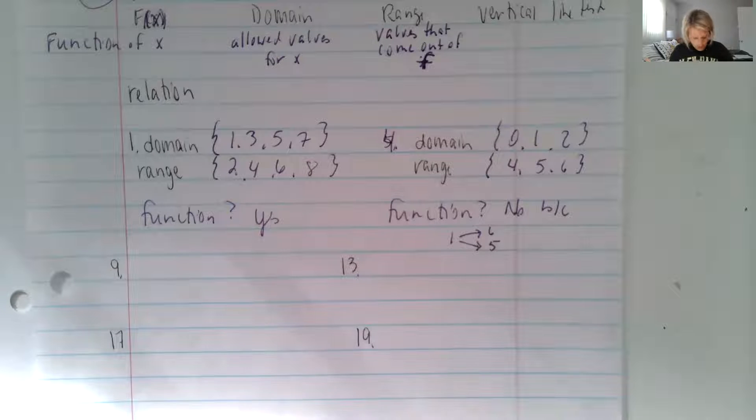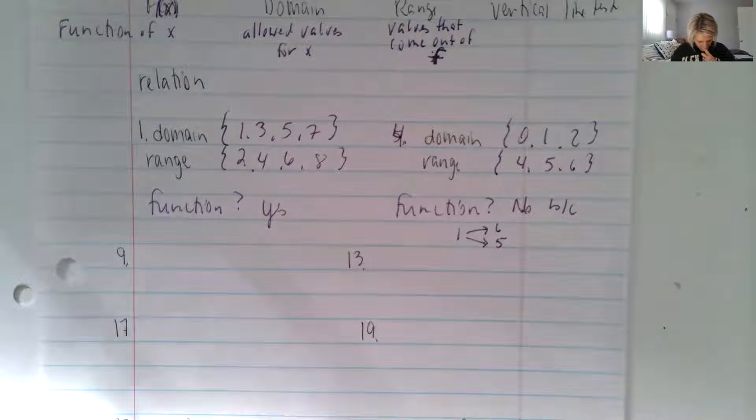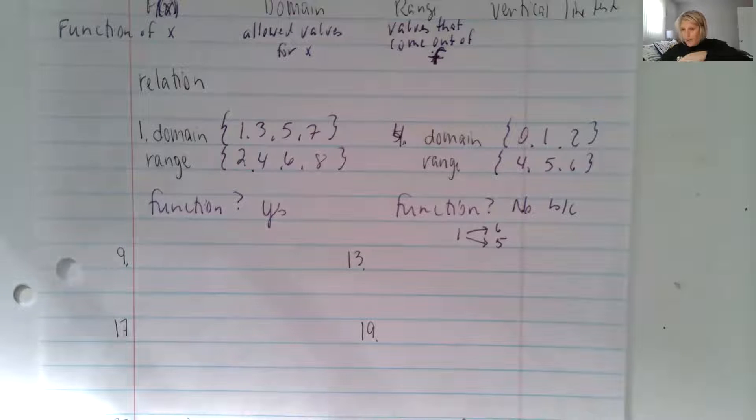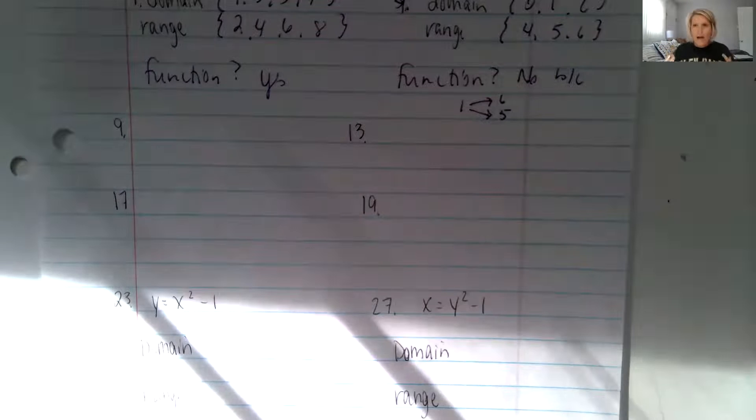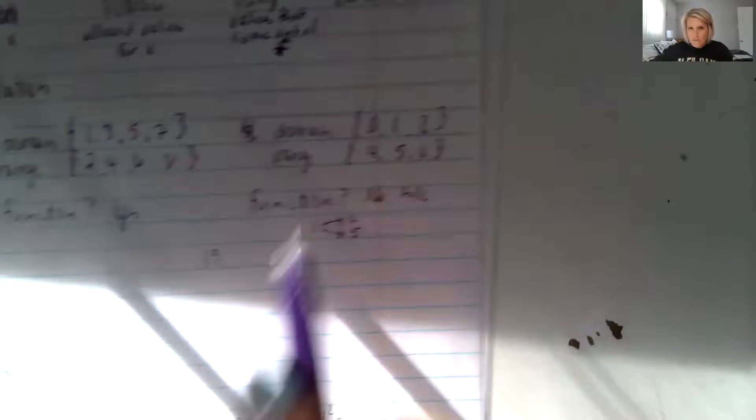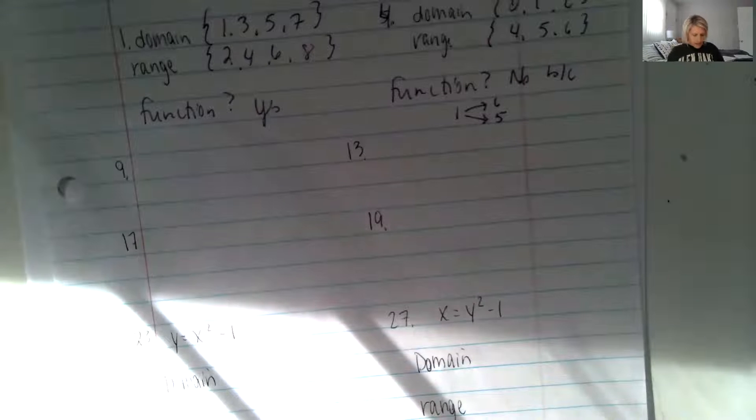Okay, questions nine through 13, or nine through 9, 13, 17, and 19 are the ones I'd like to look at next. And they're all about using visual on a graph. And it's basically using this vertical line test. So the vertical line test says that if we can draw infinitely number of lines through our graph.